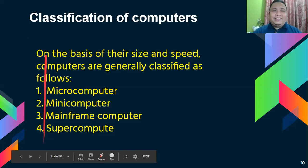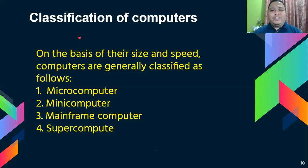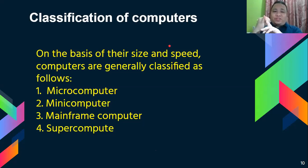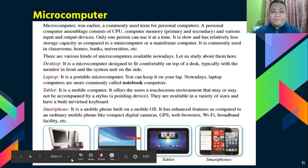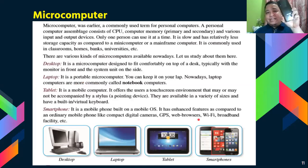There are classifications of computers. On the basis of their size and speed, computers are generally classified as follows: microcomputer, mini computer, mainframe computer, and supercomputer. Examples of microcomputers are desktop, laptop, tablet, and smartphones. Even smartphones like this are already part of the microcomputer category.